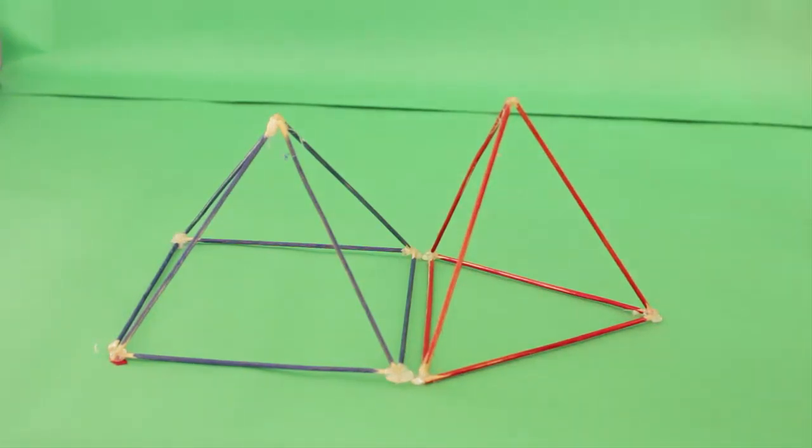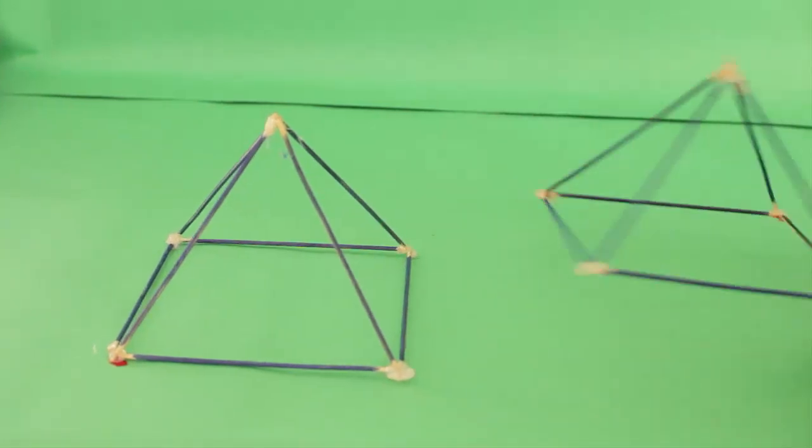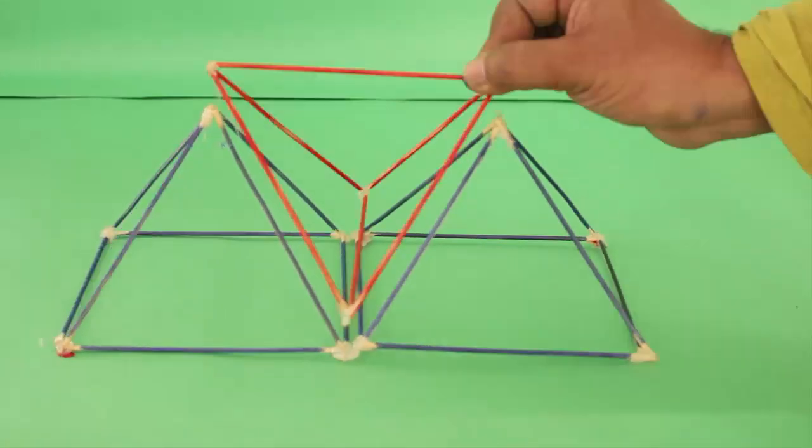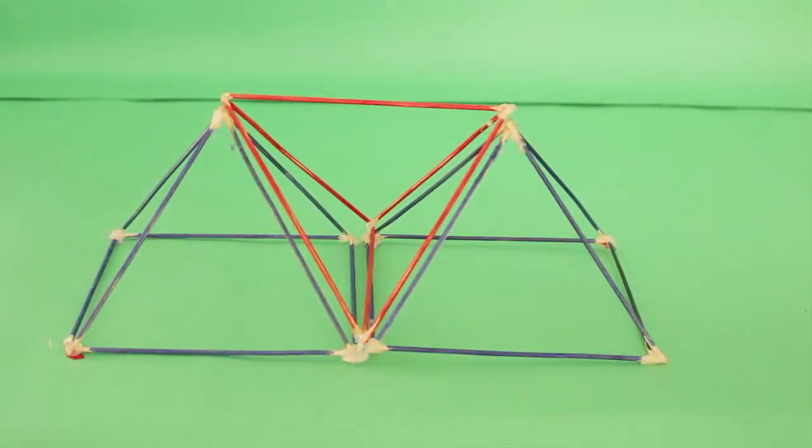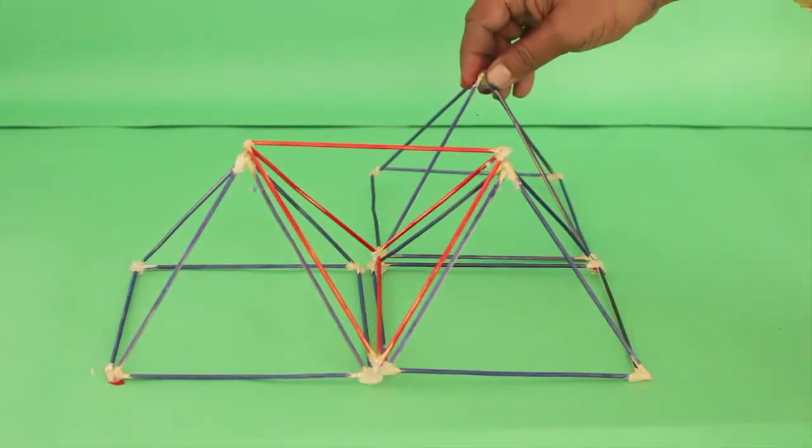Now first we will keep two square pyramids side by side and we will snug a red tetrahedron between them. Then we will place a third square pyramid.